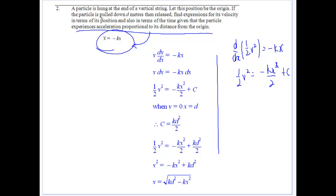So let's look at some more problems on motion here. This time a particle hung at the end of a vertical string, and we let that position be the origin. Particle's pulled down to d meters, and then we find the expression for its velocity in terms of position and terms of time.